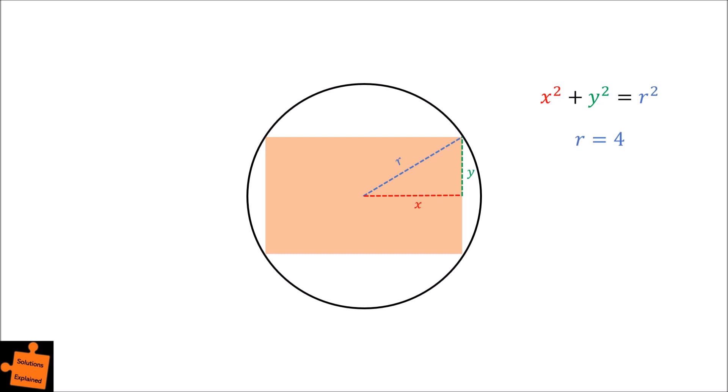In this case, r is equal to 4, and thus r squared is equal to 16, and therefore the equation of the circle is x squared plus y squared is equal to 16.